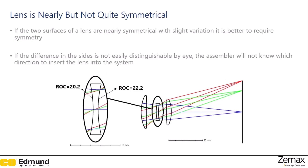Design with symmetry. If you have a lens that is nearly symmetrical but not quite, it will be difficult to align because you cannot distinguish the two sides by eye, making the alignment process much more expensive. Set the radii of curvature to be the same on both sides of the optic if they're very close, and compensate somewhere else in your system.